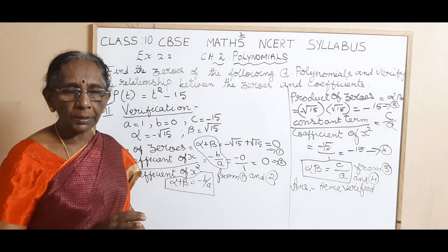So now we have calculated the zeros — the first part of the answer is over. If you apply t equal to minus root of 15, this first factor becomes 0, and 0 into anything becomes 0. If you apply t equal to root of 15, then root of 15 minus root of 15 makes the second factor 0. Now we will move to the second part of the question — verification. We are going to verify the relationship between the zeros and the coefficients.